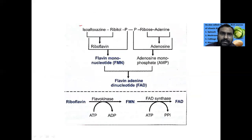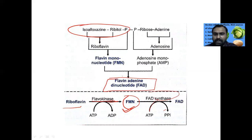This isoalloxazine ring is attached with ribitol. It is called riboflavin. With the help of flavokinase enzyme, ATP is added and it is converted to flavin mononucleotide. One more ATP is added, the phosphorus group is donated, and the adenosine group is donated, converting it to flavin adenine dinucleotide.